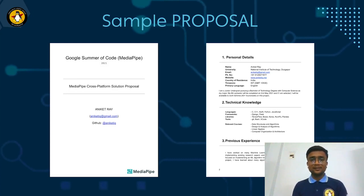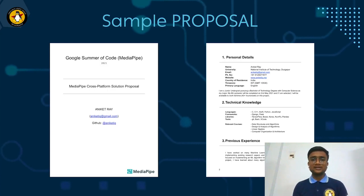The second page of your sample proposal should contain your personal details, your technical knowledge, as well as your previous experience. Your personal details should include your name, university name, email, phone number, website, country of residence, time zone, and primary language. Your technical knowledge may include the languages you are familiar with, the frameworks you have worked with, the libraries, the tools you have used in your respective projects earlier, as well as your relevant courses. Your previous experience may include all the internships and projects you have worked with earlier.